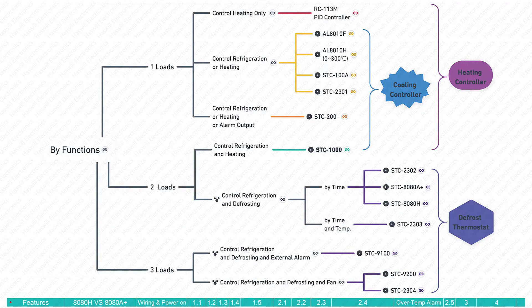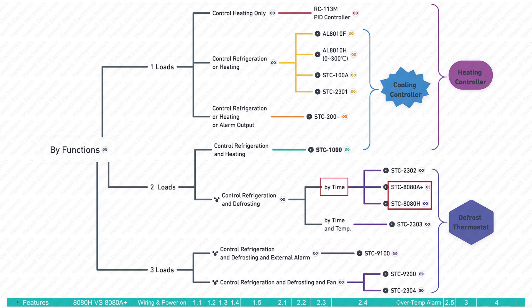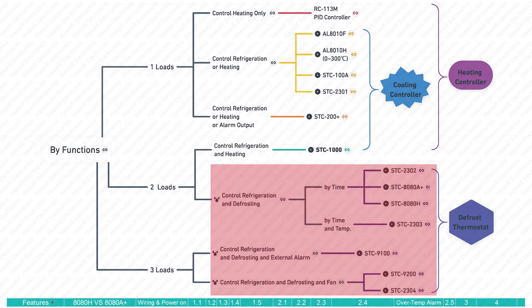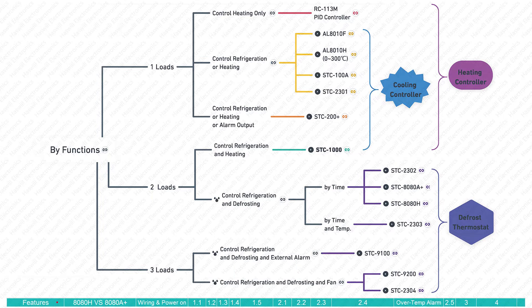As a classic defrost thermostat series, the STC-8080 controls the defroster by time only and changes the compressor status according to the temperature sensor. If you need more features such as controlling the evaporative fan, including the evaporator temperature as a judging factor, or wiring an external alarm, you may want to consider other products in this area. You will find a link to this image at the bottom of the video.